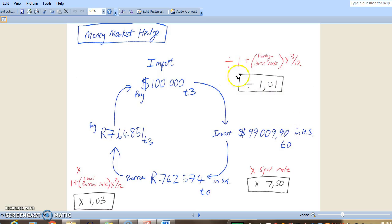We will have an investment in the US of $100,000. So there is no risk of the exchange rate moving because we will have the value in dollars. What we will have is a liability in South Africa of R764,851 which we will have to pay.